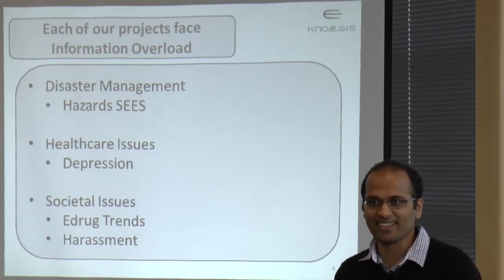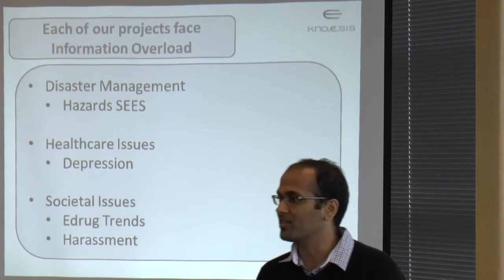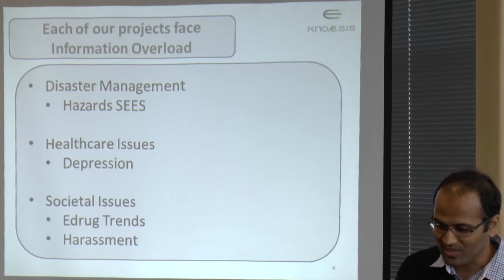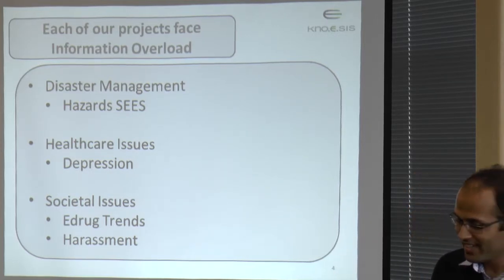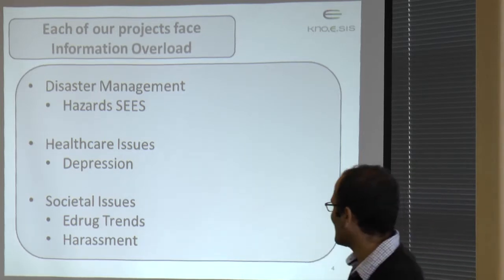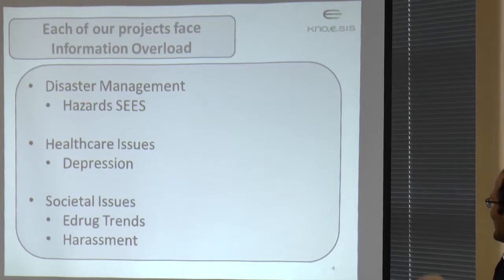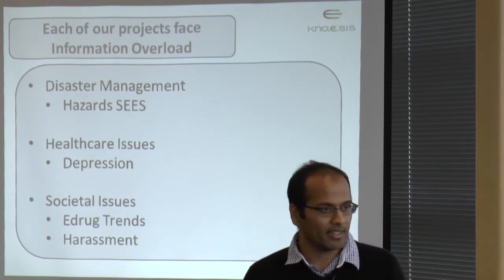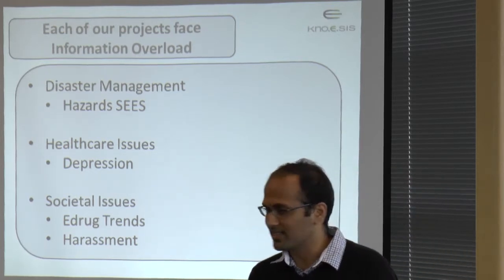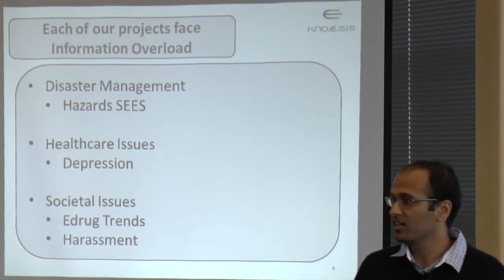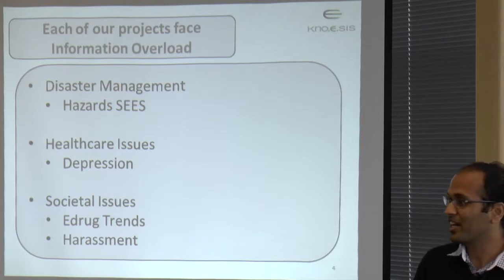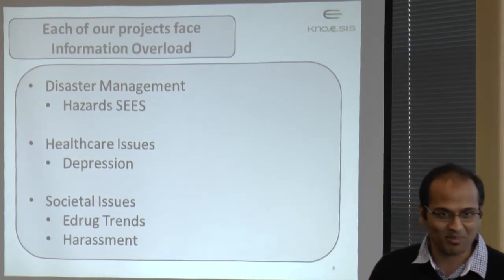Dr. Sheth would have spoken quite a bit yesterday about Twitterists and what kind of stuff Twitterists is doing. As far as I know, it's being used for three main causes: one is disaster management, which is the Hazard Cease project; the other one is depression, which is an NIH project; e-drug trends; and the harassment project. All these projects are using tweets. Each project has different requirements for the kind of data it needs. Hazard Cease is basically looking at disaster management, so we need tweets for disasters. Harassment is looking at how people are harassing others on Twitter, so you need to really find tweets which are, quote unquote, harassing other people.